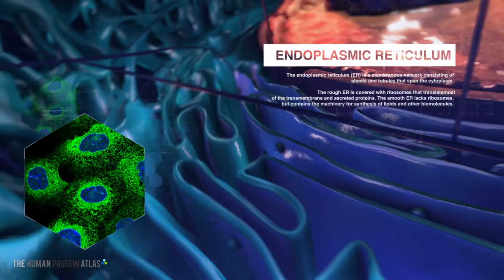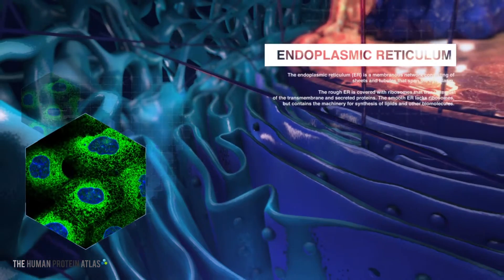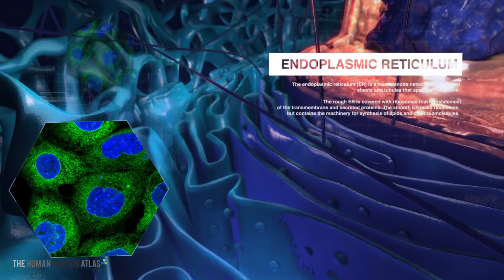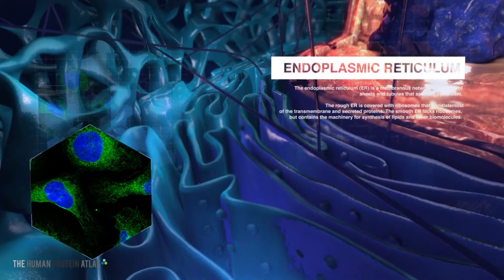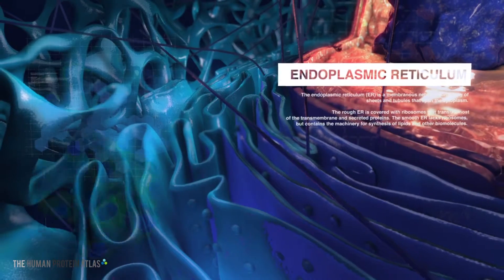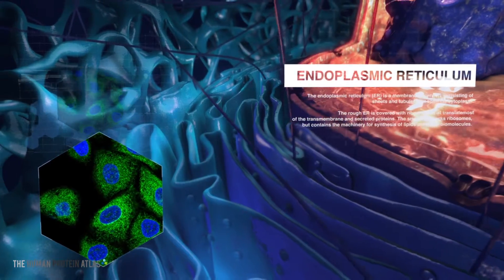The endoplasmic reticulum is connected to the outer nuclear membrane. Part of it is covered with ribosomes that translate most transmembrane and secreted proteins. It is in the endoplasmic reticulum that lipids and other biomolecules are synthesized.